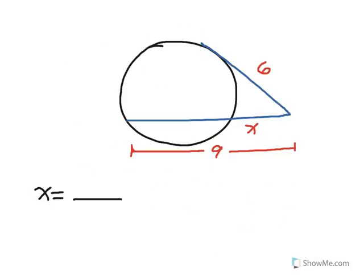In this example, we have a secant segment and a tangent segment drawn to the circle from an exterior point. The whole secant times the external part equals the tangent segment squared. So 9 times X equals 6 squared, giving 9X equals 36, and X equals 4.